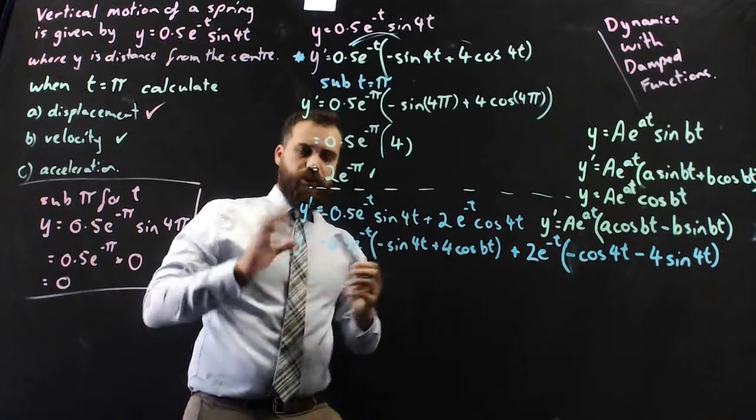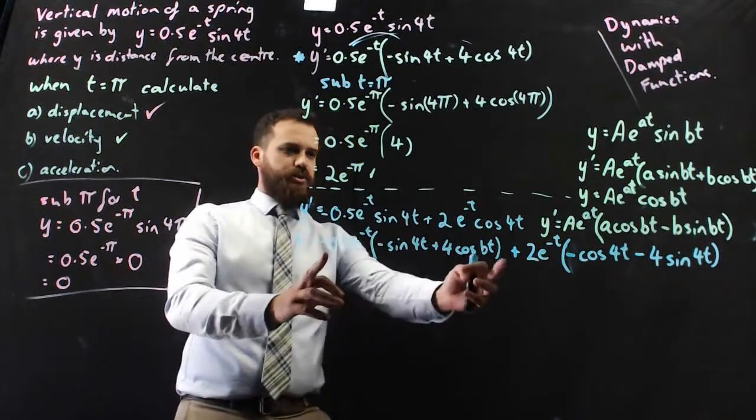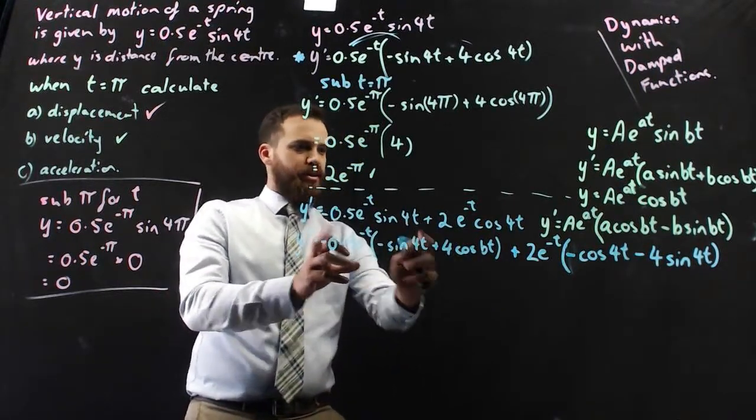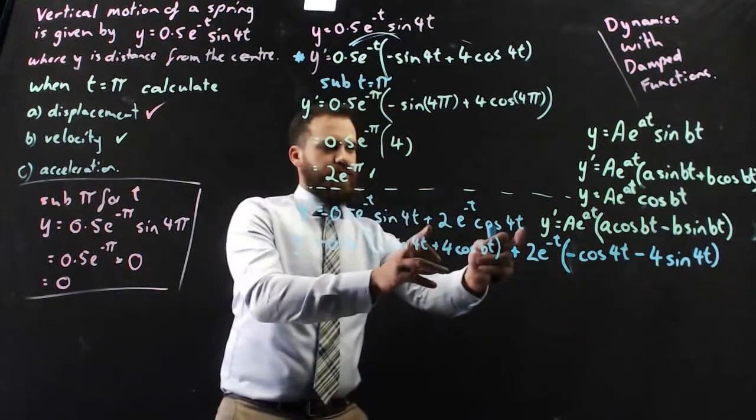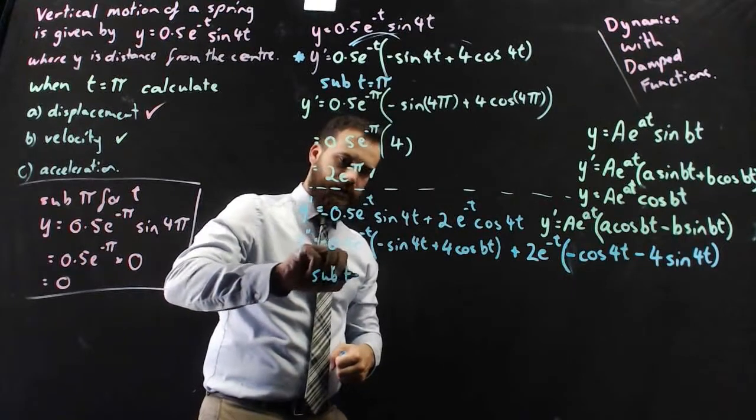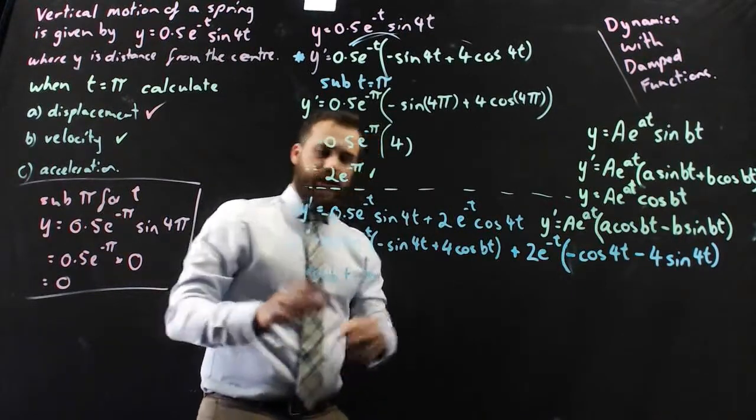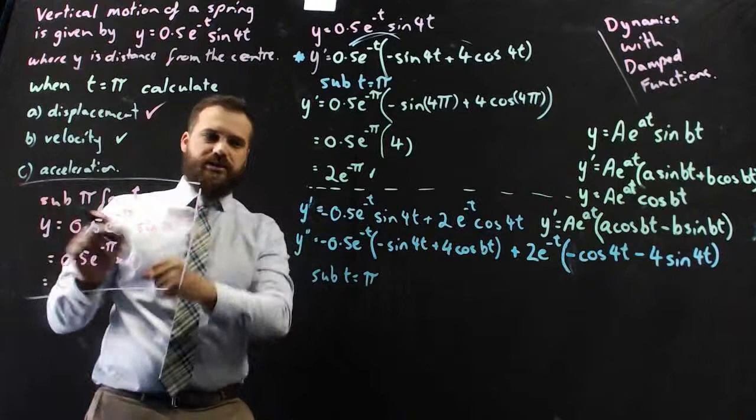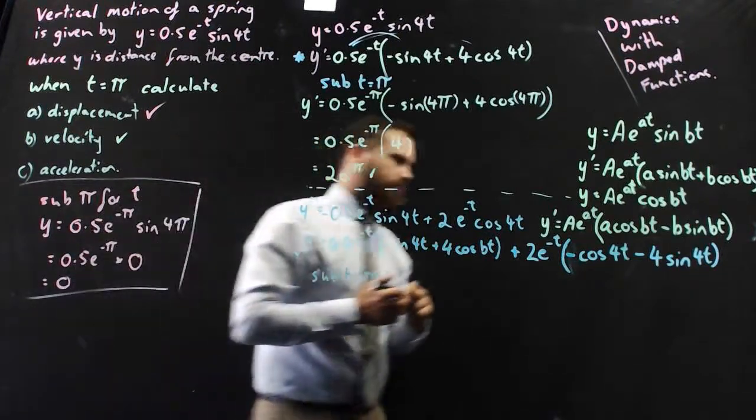Okay, so what do we have? We've got y double dash equals this, which is the derivative of this, plus this, which is the derivative of this. Now all we need to do is sub t equals pi into here and we'll find out what the acceleration is at time pi.